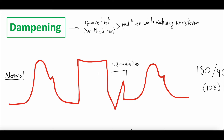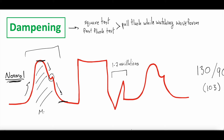As a reminder, this is a normal arterial line waveform — this is what it looks like on the monitor. You have the systolic upstroke, the systolic decline, the dicrotic notch, and the diastolic runoff. This is your systolic blood pressure, this is your diastolic blood pressure, and the area under the curve is the mean arterial pressure. Aortic valve opening, aortic valve closing — we went through all that in the first video, so definitely check it out if any of this looks unfamiliar.